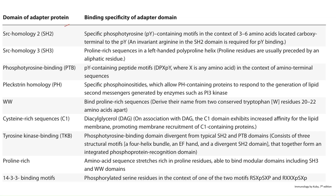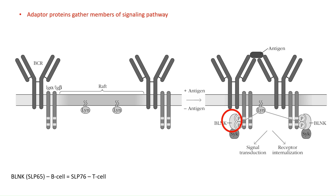Here are the domains of adapter proteins and their binding specificities. SH2 (SRC homology 2) is specific for phosphorylated motifs containing 3 to 6 amino acids at the carboxyl terminal of tyrosine. SH3 (SRC homology 3) is specific for proline-rich sequences. Pleckstrin homology domain is specific for phosphoinositides. These are the different domains of adapter molecules with particular binding specificities. Once the receptor is activated by tyrosine phosphorylation, it binds the adapter molecule, which functions as a docking site for other signaling molecules, bringing them into close proximity.